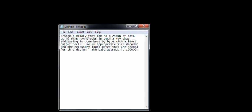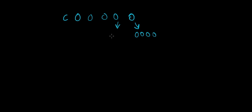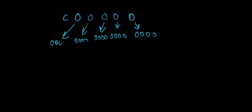The base address is C0000 — that's C with five zeros. Each hex digit is four bits, so we expand it: the five zeros become 20 zero bits, and C in binary is 1100. So the full binary representation of the base address C00000 is 1100 followed by twenty zeros.